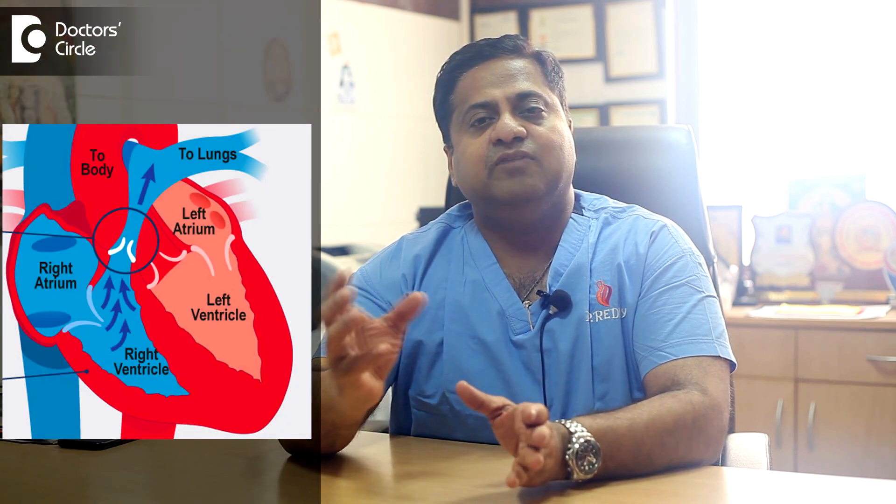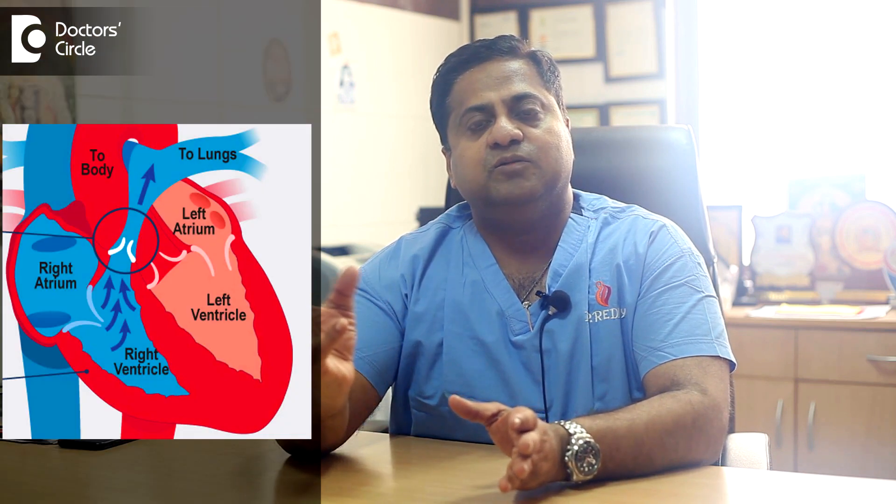Why that defect is formed is because it is a malaligned VSD. Whenever there is an anterior deviation of this infundibular septum, there is a defect in the septum. And there is also overriding of the aorta. The infundibulum also becomes stenotic, and the pulmonary artery also will become stenotic. This is the mechanism which happens in Tetralogy of Fallot.